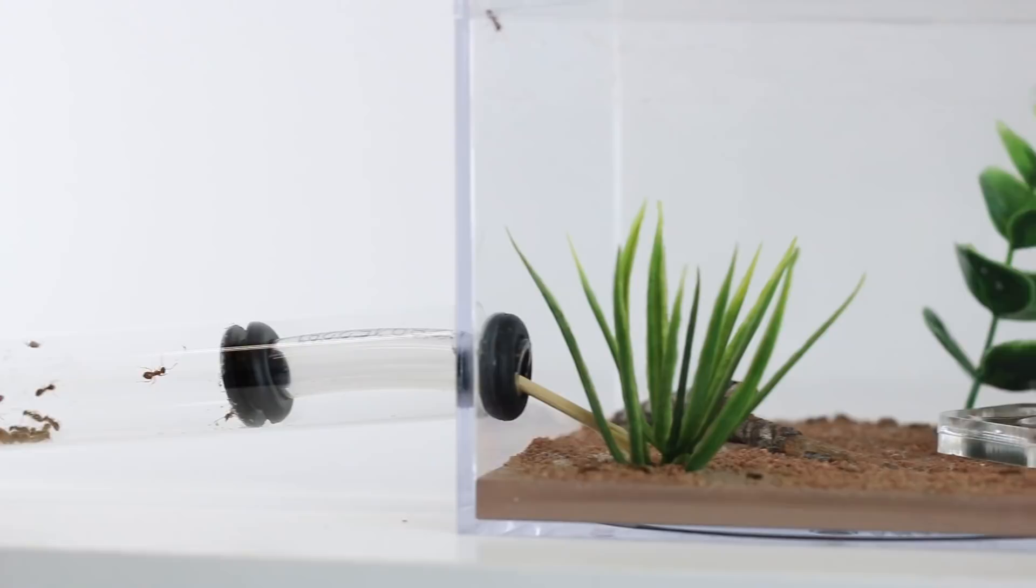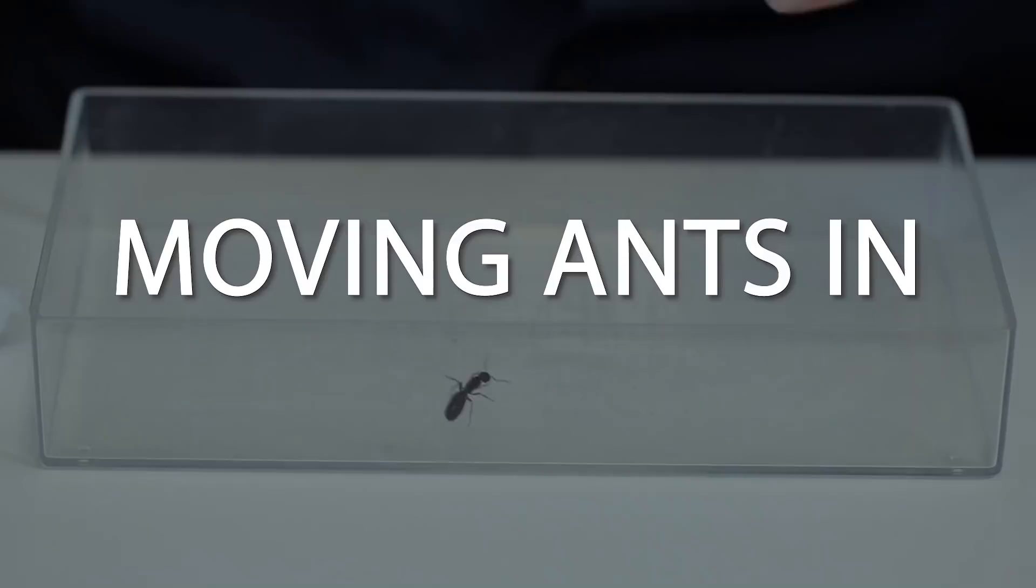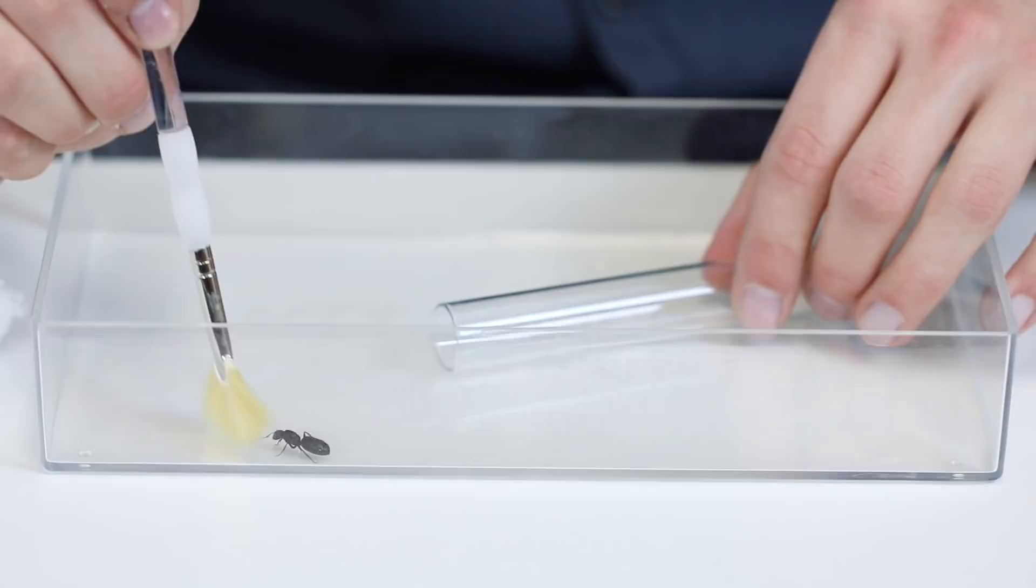Now that you've prepared a test tube, you are ready to move the ants in. If you are starting with a single queen, gently coax her into the tube. You may use a paintbrush to help guide her or use your fingers if you have a steady hand.